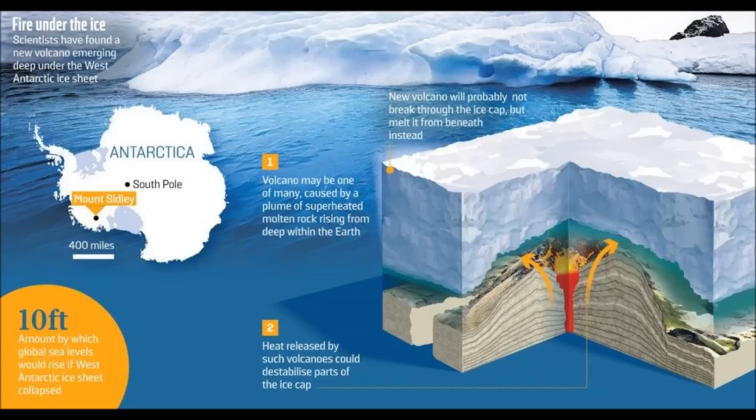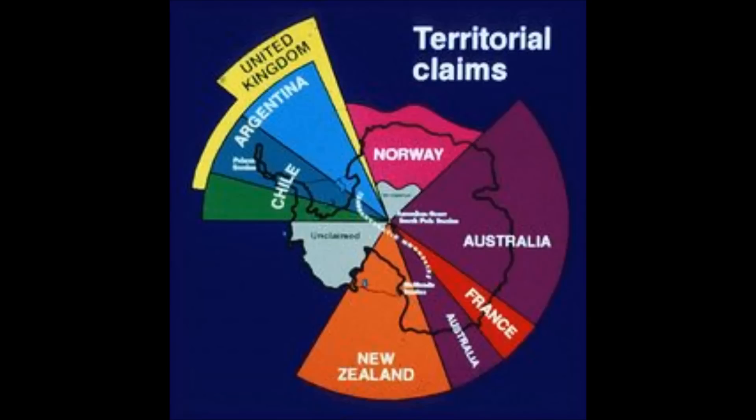Underneath the solid upper layer of earth is a hotter and more fluid layer of rock called the mantle. Exactly how hot and fluid the mantle is varies across the planet.